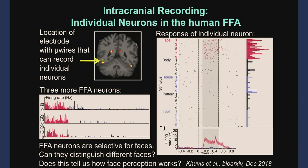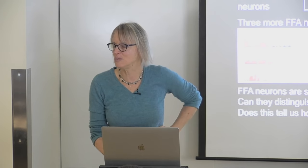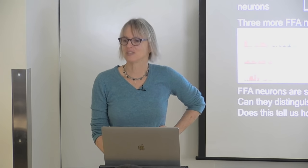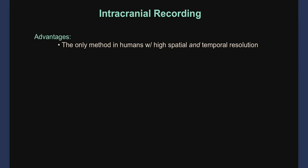Intracranial recording — both with grids and single units. Advantages: the only method in humans that has both pretty good spatial resolution and temporal resolution at the same time. Disadvantage: you need a craniotomy, which is no picnic — you need a huge piece of your skull removed and neurosurgery. The only times we get to do this are when it's required clinically, and everything is under control of the doctors as it should be. The doctors make all the choices about where the electrodes go, and we just get to sit in the background and say please look at these stimuli. Right now there's a patient in Albany, New York who has electrodes right over a really exciting part of the brain that responds specifically to music.